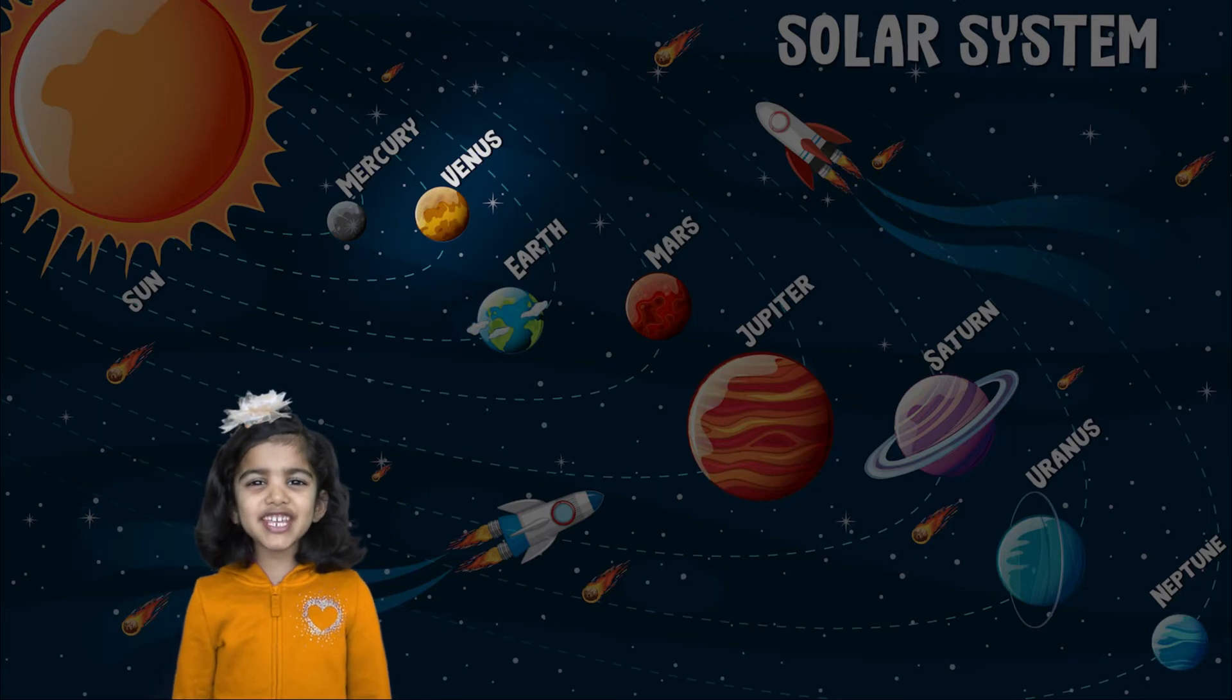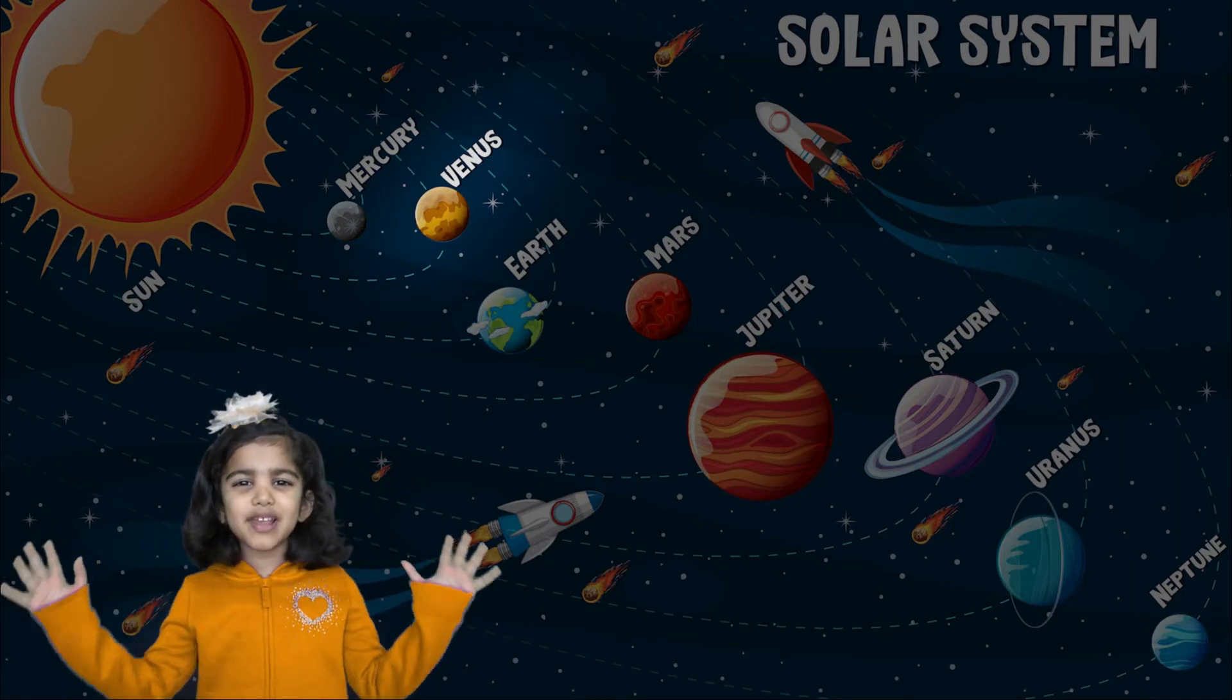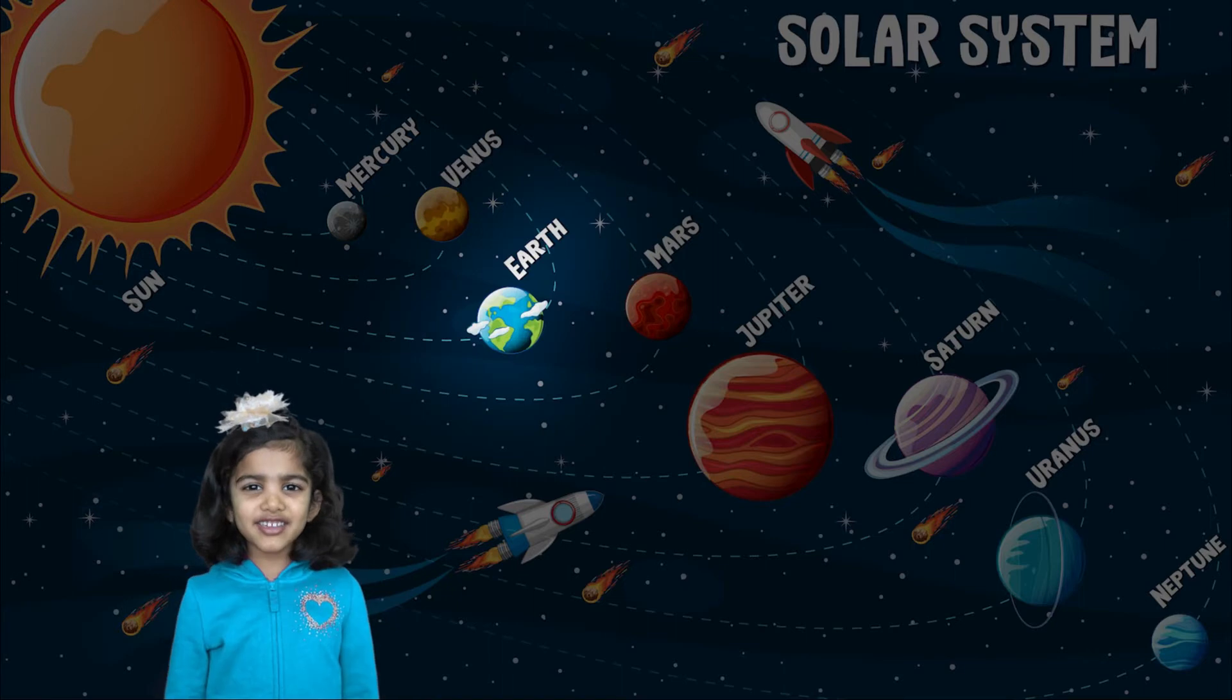Venus, Venus is the brightest planet in the sky. Earth, Earth is our planet.